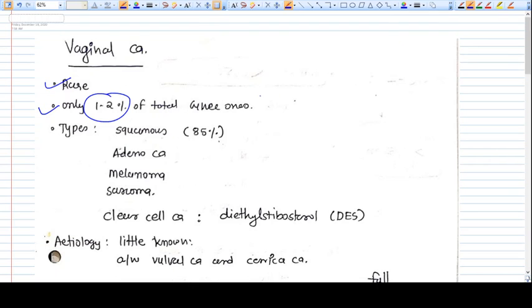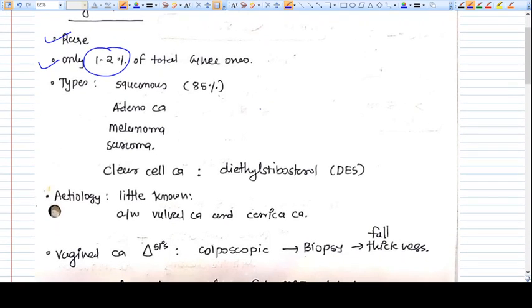What are the types? The most common type of vaginal cancer is squamous cell carcinoma at 85 percent. The remaining 15 percent includes adenocarcinoma, melanoma, and sarcoma.